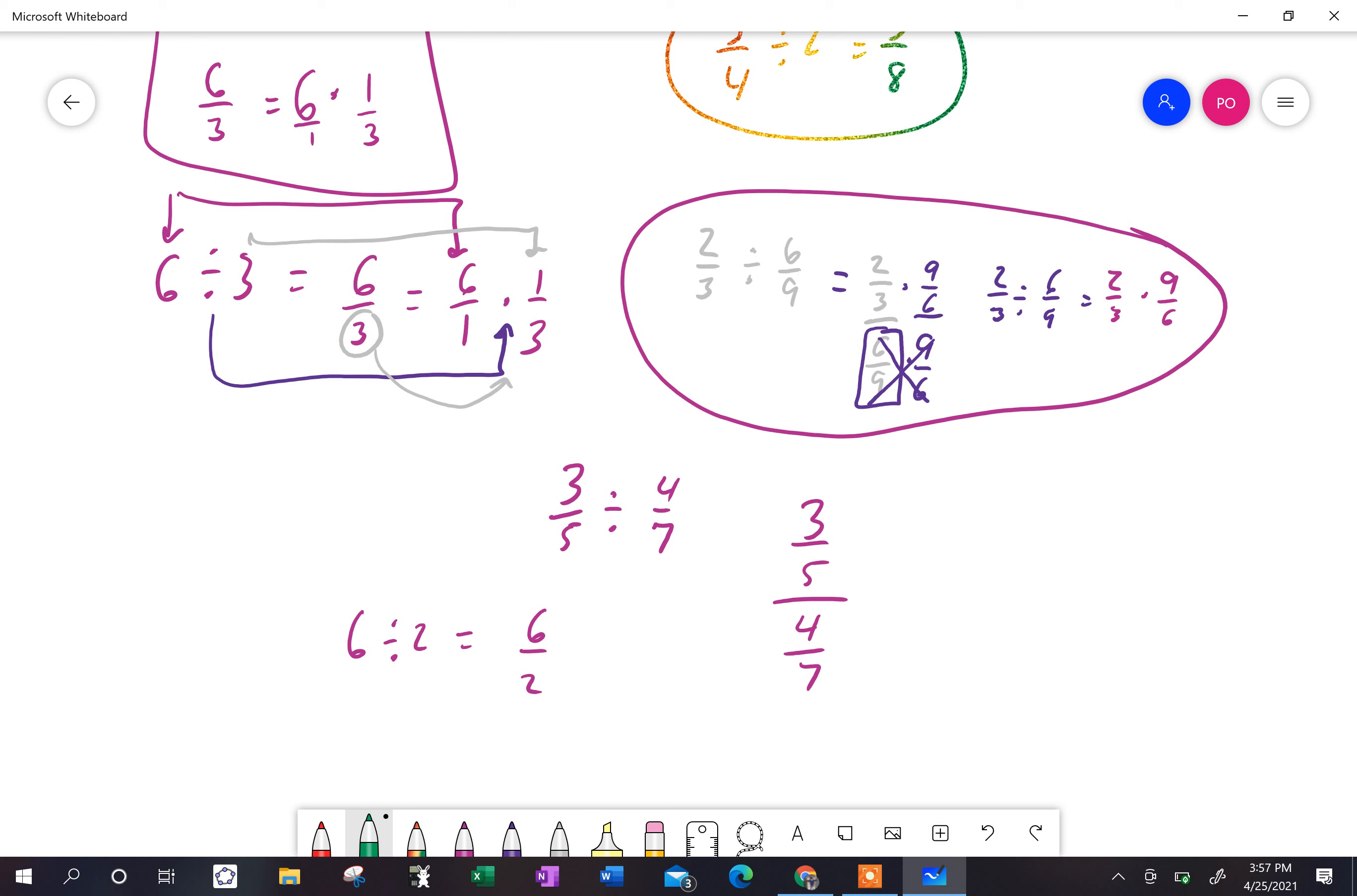Now, the thing is, I want to get rid of this fraction down here. So I'm going to multiply this whole big weird fraction. I'm going to multiply it by one.